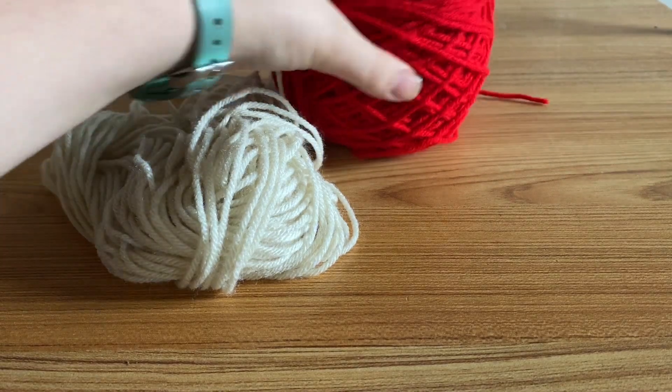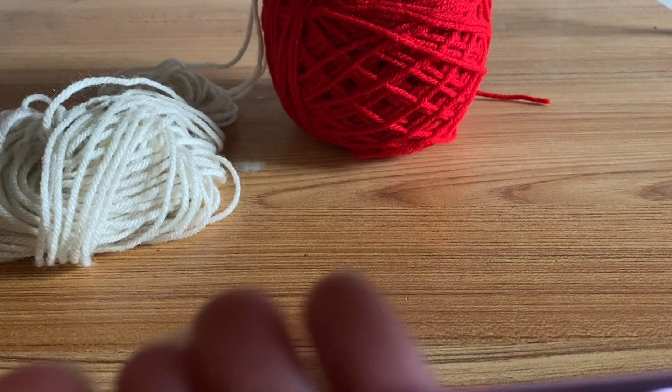Hello! To get started, you're going to need a red and a white worsted weight yarn and a 5 millimeter crochet hook.